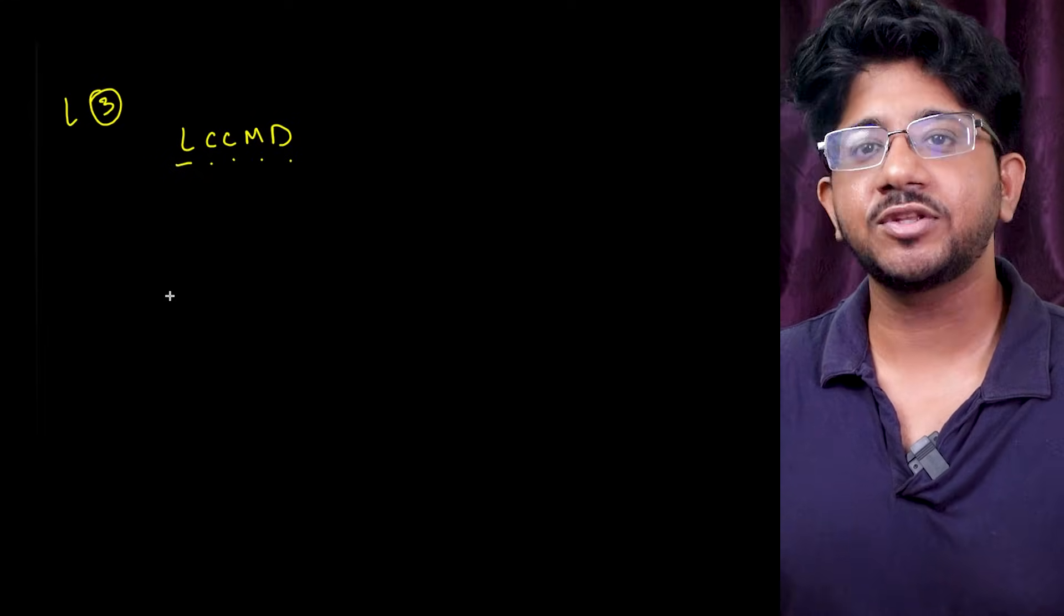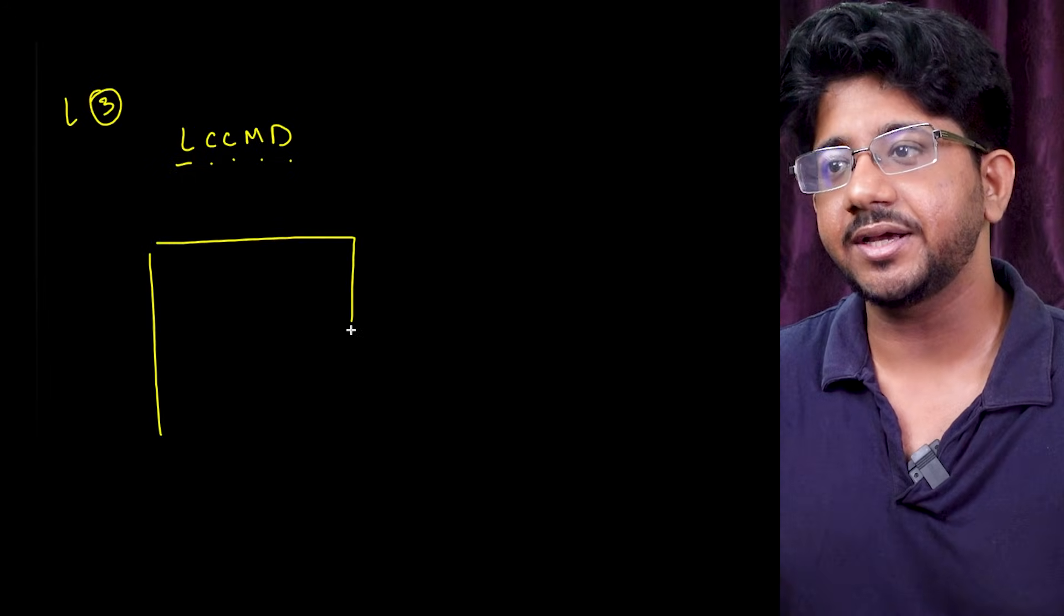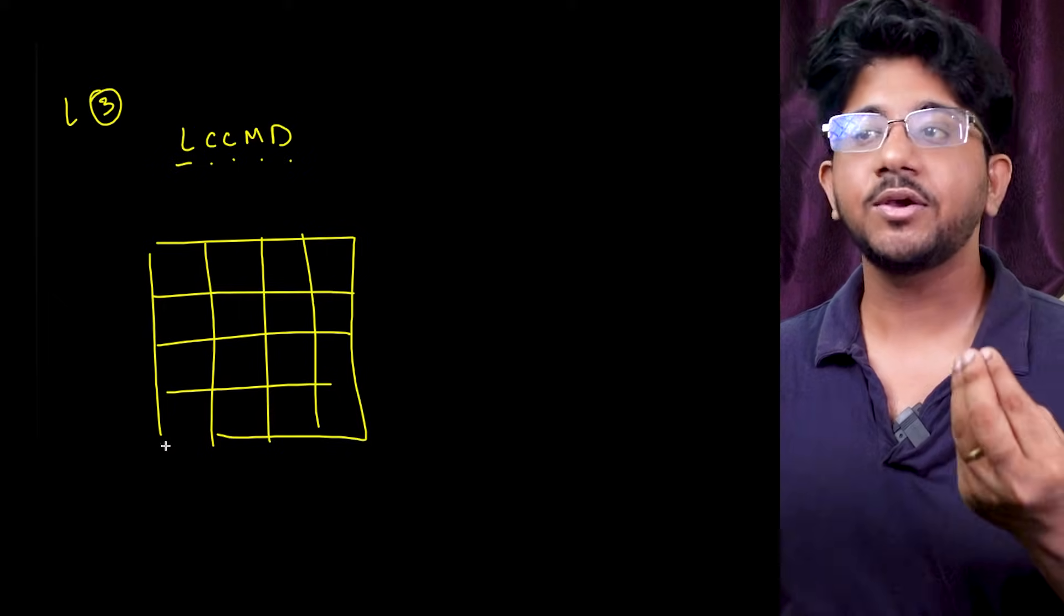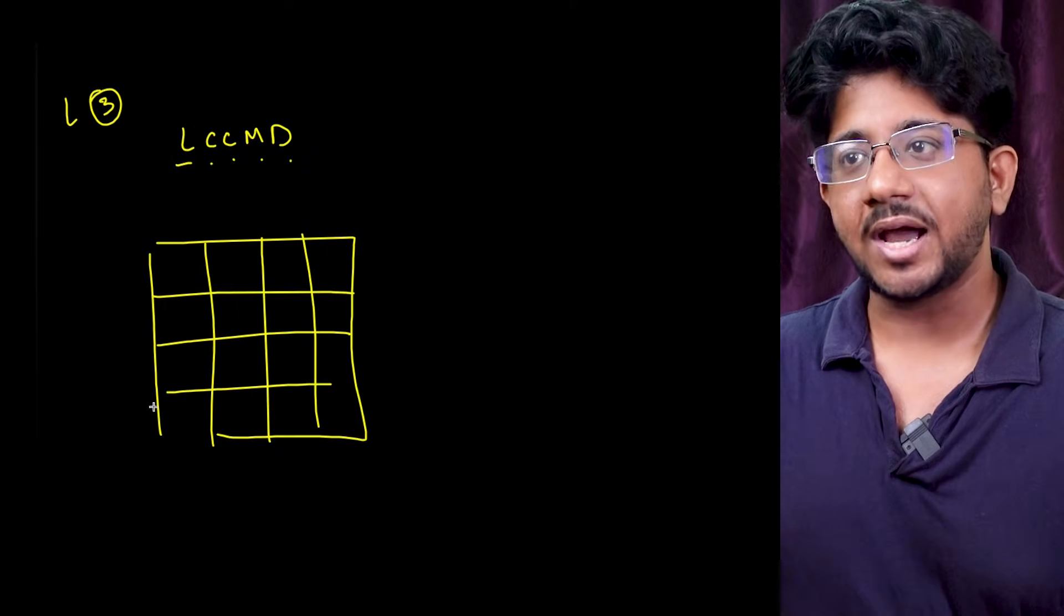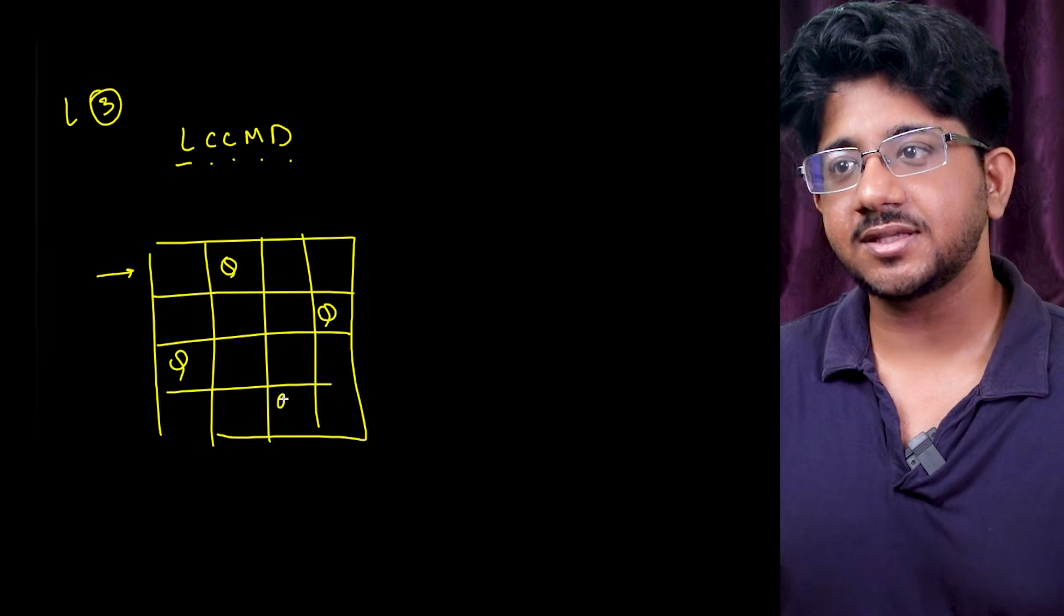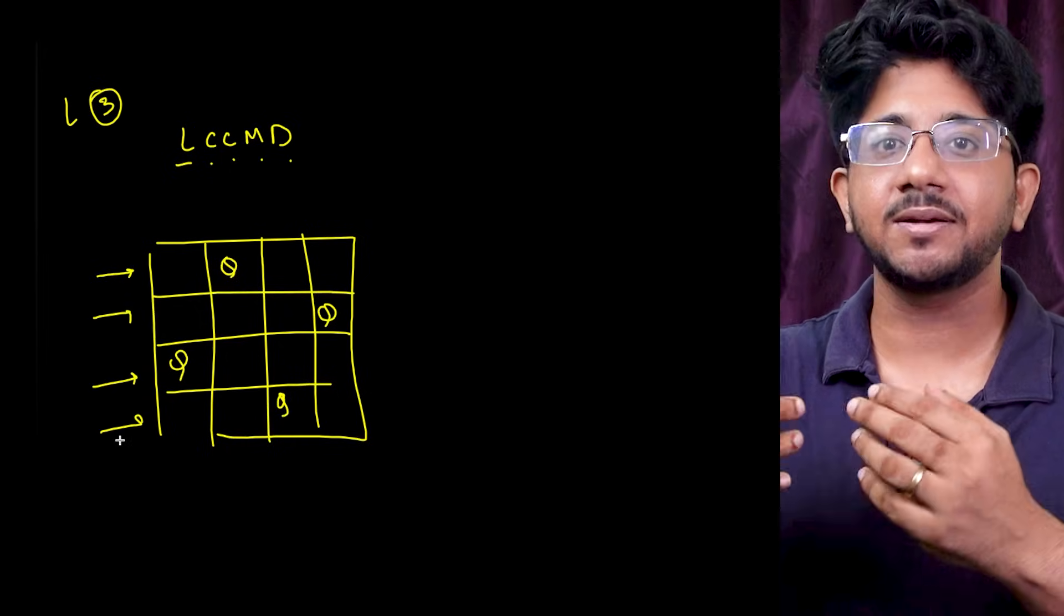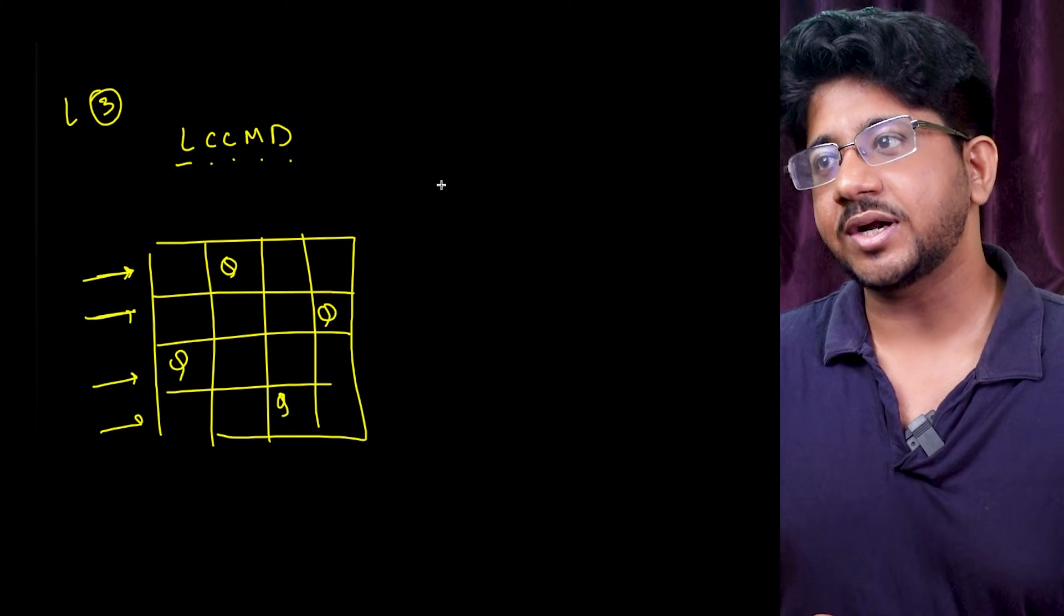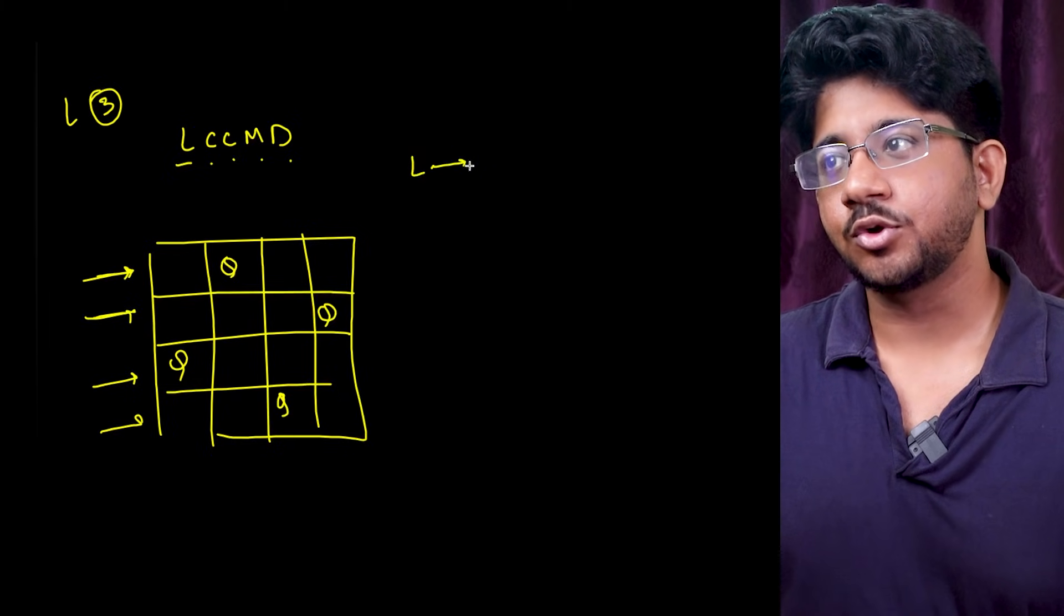For an example if you have the standard n queen problem right. Let's say you have a 4 cross 4 board and you are trying to design a solution. What you think about in this is okay you have queens in each row so I can place my first queen in this then this then this then this and this iterative process by which I can maybe get a solution right. So you are going row by row.